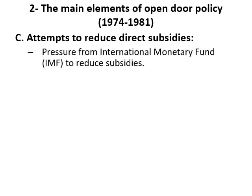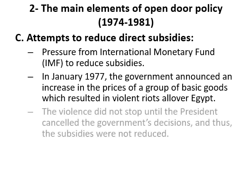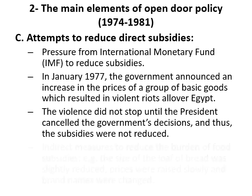The third element was to reduce direct subsidies. There was pressure from the International Monetary Fund (IMF) to reduce subsidies. In January 1977, the government announced an increase in the prices of a group of basic goods, which resulted in violence all over Egypt. The unrest did not stop until the president cancelled the government's decisions, and the subsidies were not reduced.